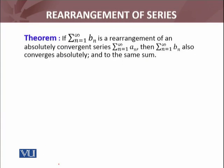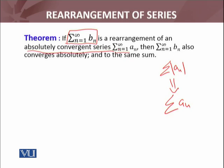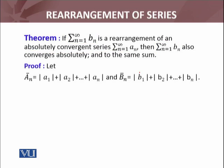The result: if summation n equals 1 to infinity of b_n is a rearrangement of an absolutely convergent series summation n equals 1 to infinity of a_n, then summation a_n absolute convergence implies this series is convergent. Then the rearrangement — the new series obtained — is also absolutely convergent and it converges to the same sum. Let's prove this.